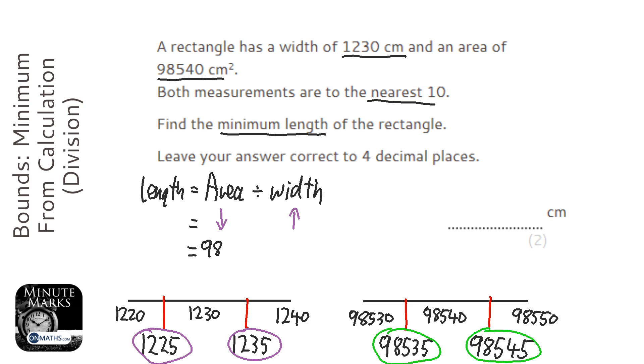So the area I want is the lowest it can be, which is 98,535. And to make the answer as small as possible, I want the width to be as big as it could be, which is 1,235.